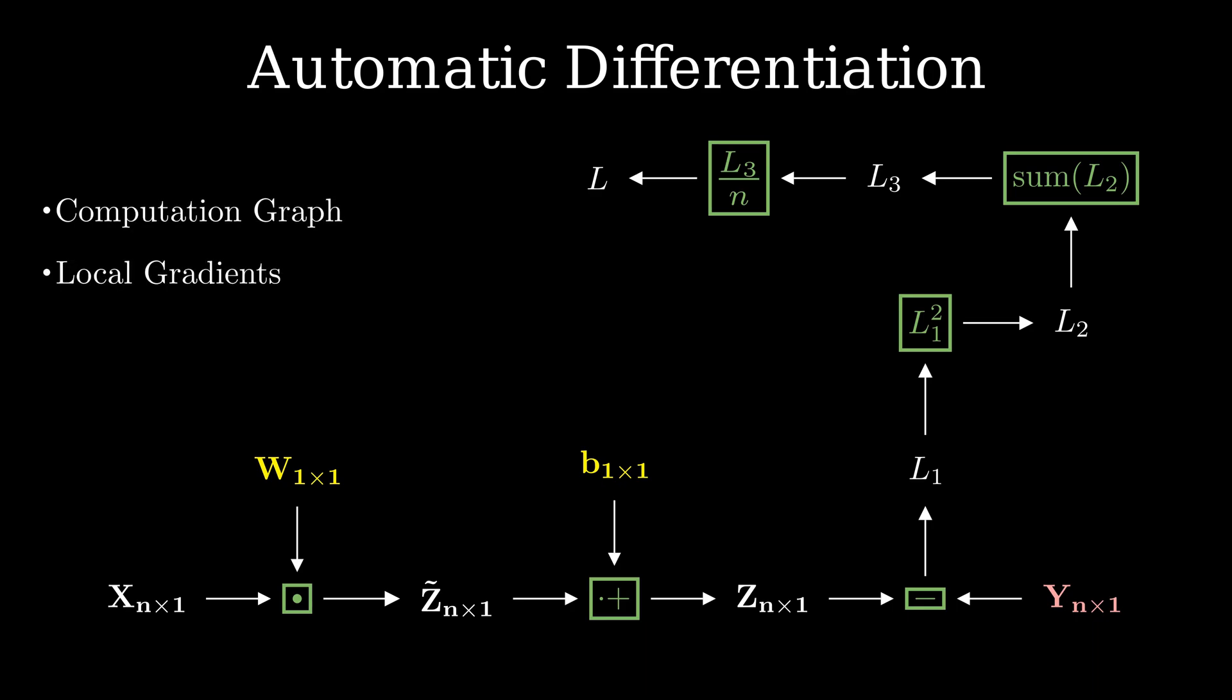Automatic differentiation needs two things, computation graph and local gradients. We already have the graph, which is made up of all the variables and the operations performed on them. Let's look at what local gradients are.